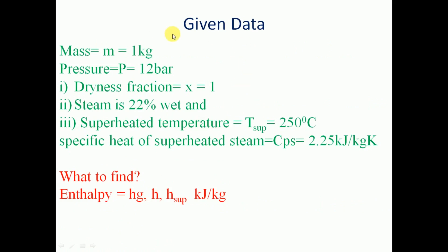The given data: mass is 1 kg, pressure P is given as 12 bar. We can directly refer this pressure in the steam tables to find the different steam properties. In the first case, dryness fraction x is equal to 1, that is steam is dry saturated.